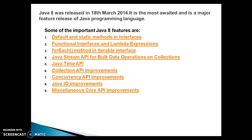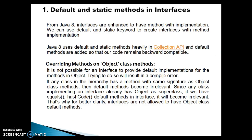Let's start with the first important feature: default and static methods in interfaces. From Java 8 onwards, interfaces can come up with a static or default method. We can use the default or static keyword to create interfaces with method implementation. Java 8 uses default and static methods heavily in the Collection API, and default methods are added so that our code remains backward compatible.